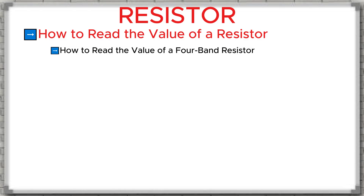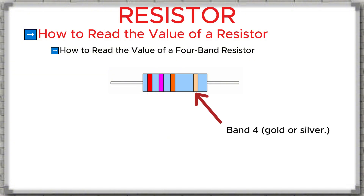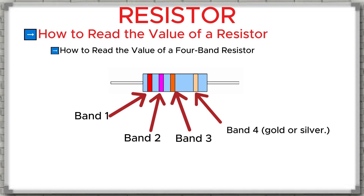How to read the value of a four-band resistor. To read the value, the first step is to identify which band is the first and which is the last. For a four-band resistor, band number four — the last band — is always gold or silver. This band represents the tolerance. Band one is the tens digit, band two is the units digit, and band three is the multiplier — a power of 10. The formula is: resistance value equals band one, band two, times 10 to the power of band three.